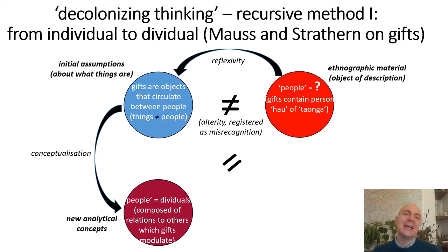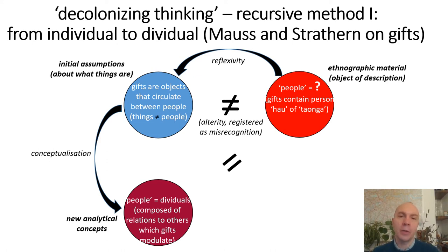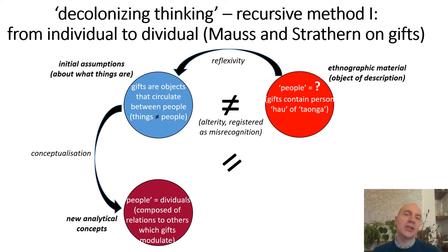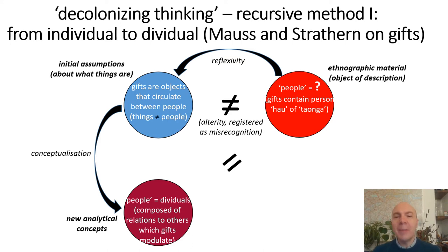Those two positions are not equivalent to the positions in the previous diagrams, because they describe a relationship of thought, not a cross-cultural geopolitical distribution of social-cultural configurations. The initial assumptions and the ethnographic material might be located geographically, but this diagram does not try to depict that geographical-geopolitical translation. It's rather trying to depict the procedure of anthropological thinking that might allow it to operate in a decolonized way.